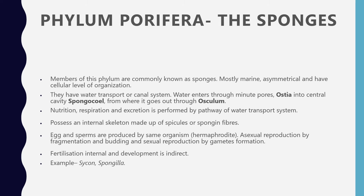They produce eggs and sperms, meaning they are hermaphrodites. Asexual reproduction occurs by budding and fragmentation. Fertilization is internal and development is indirect. Examples include Sycon, Spongilla, and Euplectella — also known as glass sponges — which all belong to this phylum.